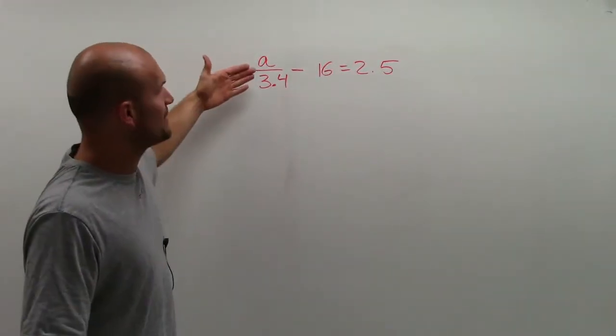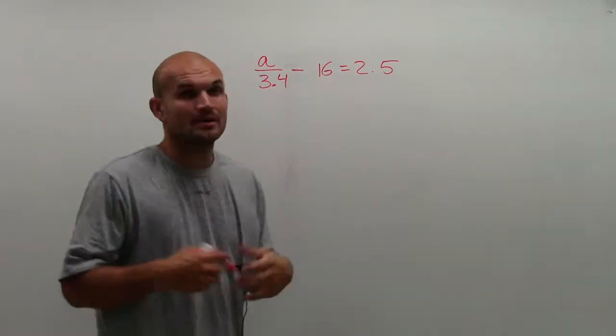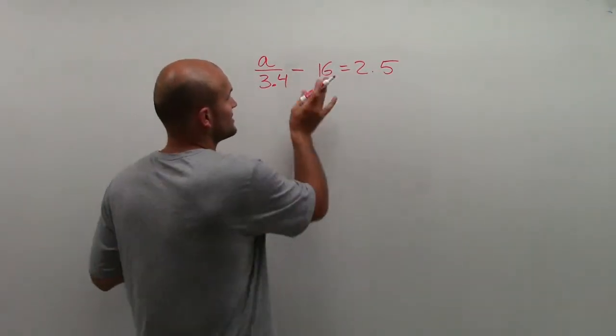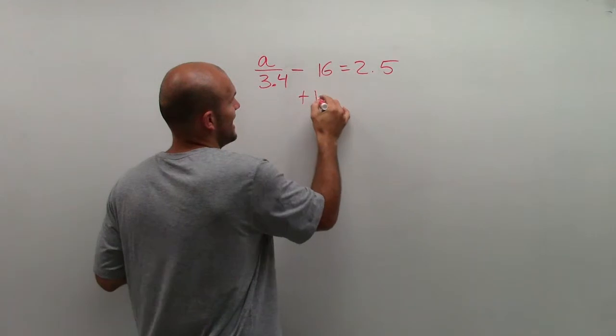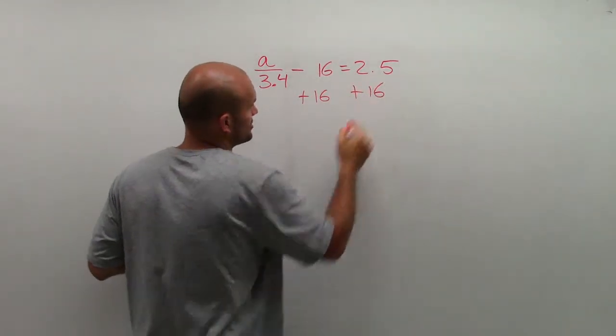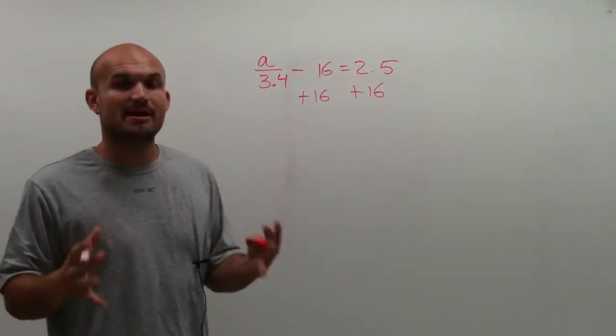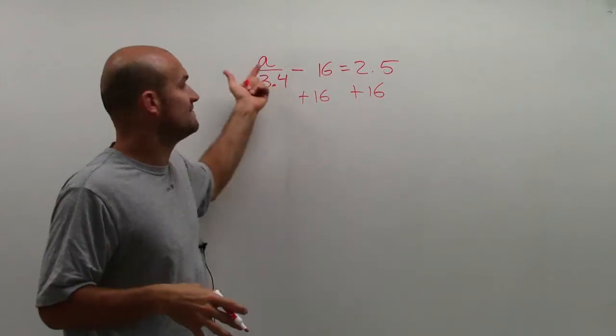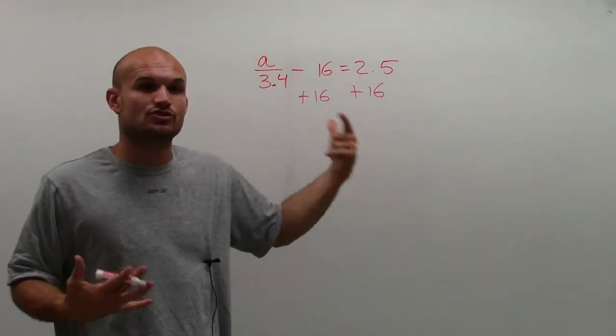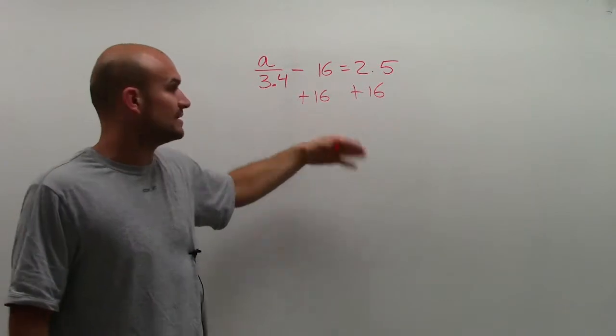So a divided by 3.4 minus 16 equals 2.5. Remember, the first thing I want to do is to undo subtraction, I need to add 16 to both sides. Because the whole purpose of this is we need to find the value of a that makes this equation true.